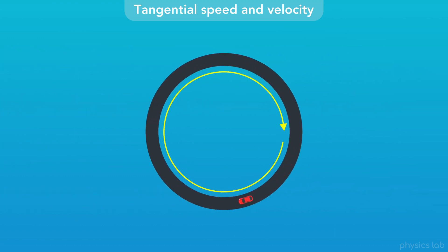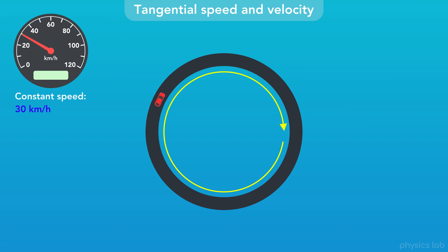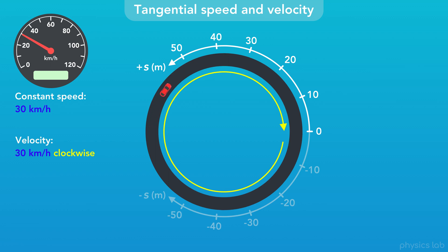So what does that look like? If this car is driving in a circle with a constant speed of 30 kilometers per hour, we could say that the velocity of the car is 30 kilometers per hour clockwise. But, we're usually going to set up a circular axis to describe the motion, and we're going to establish the positive and negative directions up front.